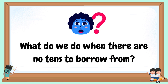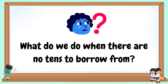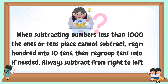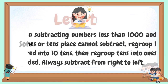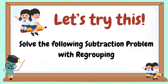What do we do when there are no 10's to borrow from? When subtracting numbers less than 1,000 and the 1's or 10's place cannot subtract, regroup 100 into ten 10's. Then regroup 10's into 1's if needed. Always subtract from right to left. Let's try this — solve the following subtraction problems with regrouping.